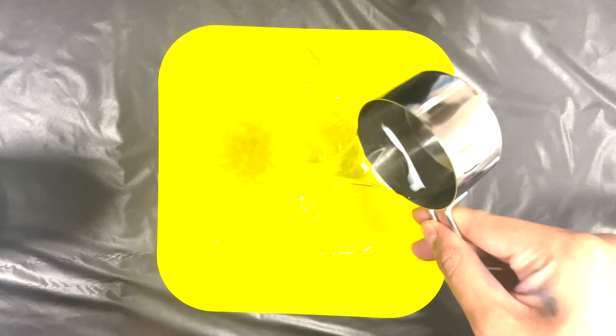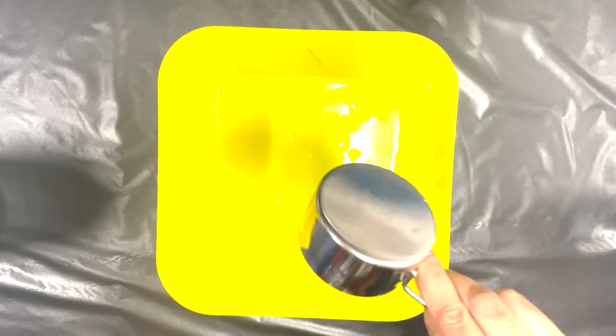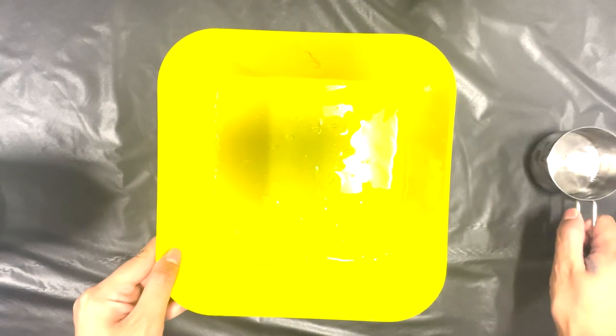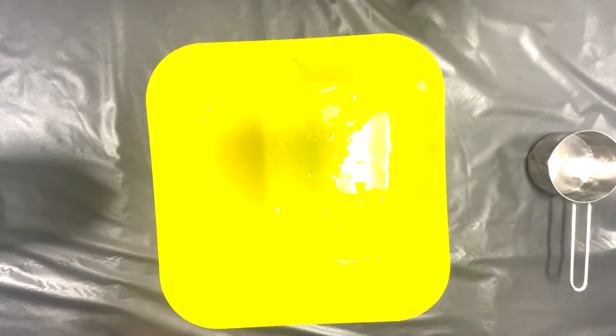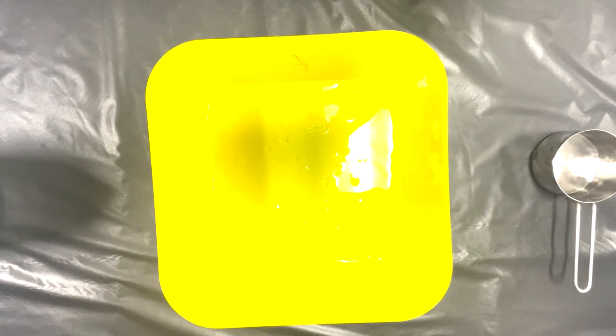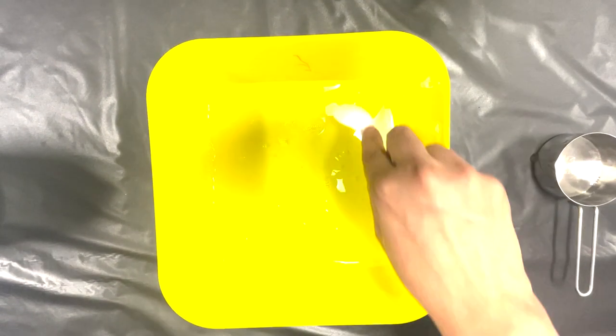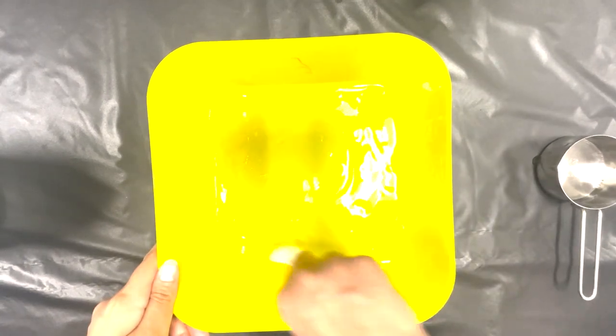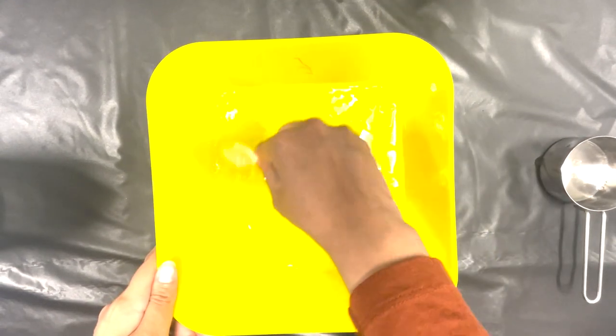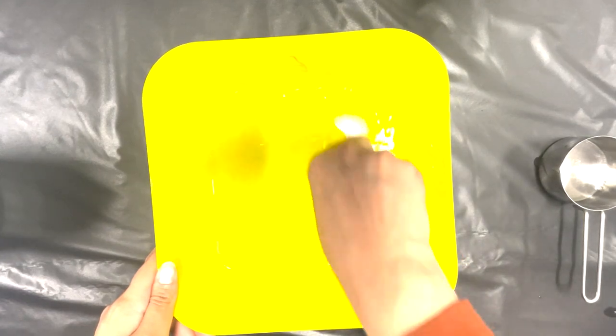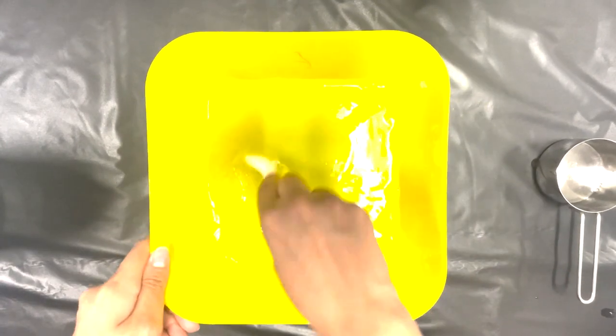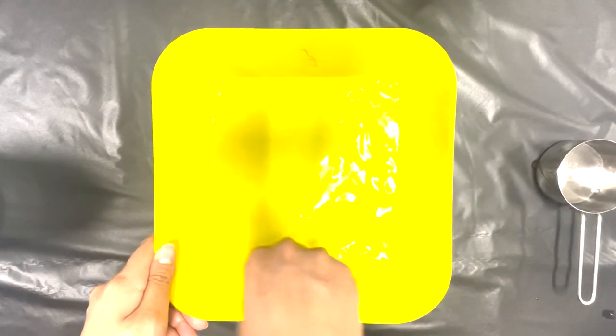Now the next thing that we're going to have to do is mix these two together using a spoon. You can use your hands too but for this step I'm using a spoon. And you'll notice that as you are mixing them together it'll feel a little hard because you're using glue and it's a little sticky.